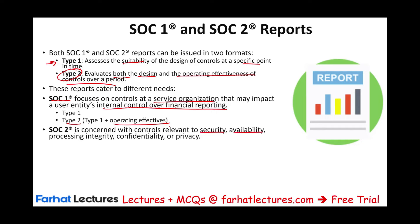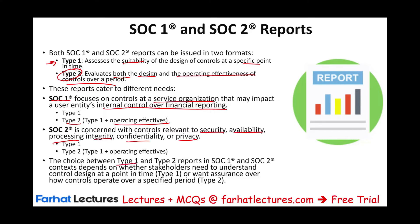SOC 2 is concerned with controls relevant to security, availability, processing integrity, confidentiality, and privacy — the AICPA trust service criteria. The choice between Type 1 and Type 2, and between SOC 1 and SOC 2, depends on whether stakeholders need to understand the control design at a point in time (Type 1) or want assurance on how controls operate over a specific period (Type 2). If you just want to look at the design, you ask for Type 1. If you want assurance that those designs are working properly, you ask for Type 2.